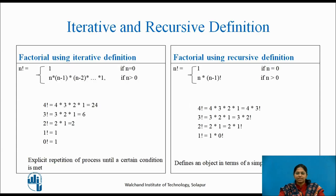Let us see the difference between iterative and recursive definition. To explain this difference, we are taking the factorial example. Let us see the factorial using iterative definition. Here, n factorial is equal to 1 if n is equal to 0, and if n is greater than 0, then n is multiplied to n minus 1, which is again multiplied to n minus 2, and this process is continued till 1 is reached.